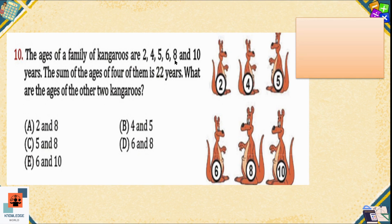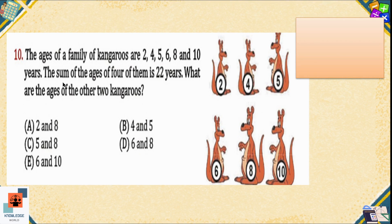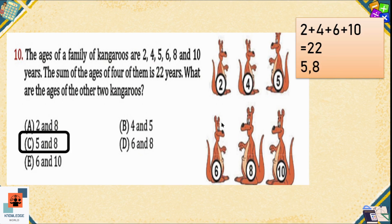Question number ten: The ages of a family of kangaroos are 2, 4, 5, 6, 8, and 10 years. The sum of the ages of four of them is 22 years. What are the ages of the other two kangaroos? We start with the biggest number, 10, and avoid 5 because it is odd and will not produce 22. Considering the remaining four: 10 + 4 + 2 + 6 = 22. Option C is the correct option. The remaining two kangaroos have ages 5 and 8.